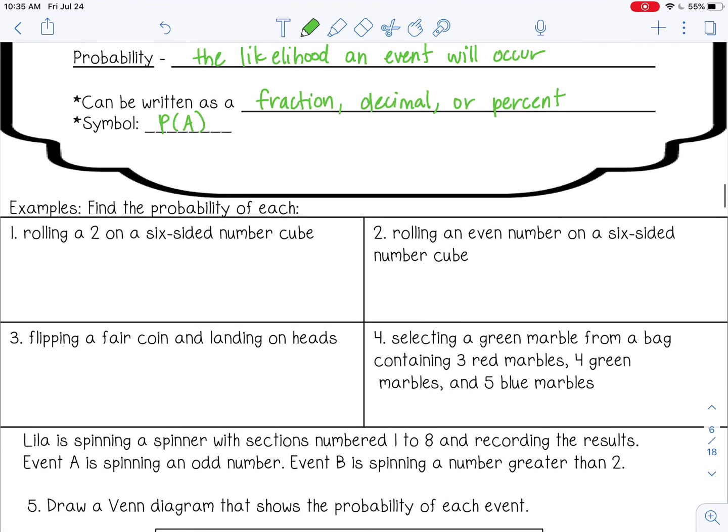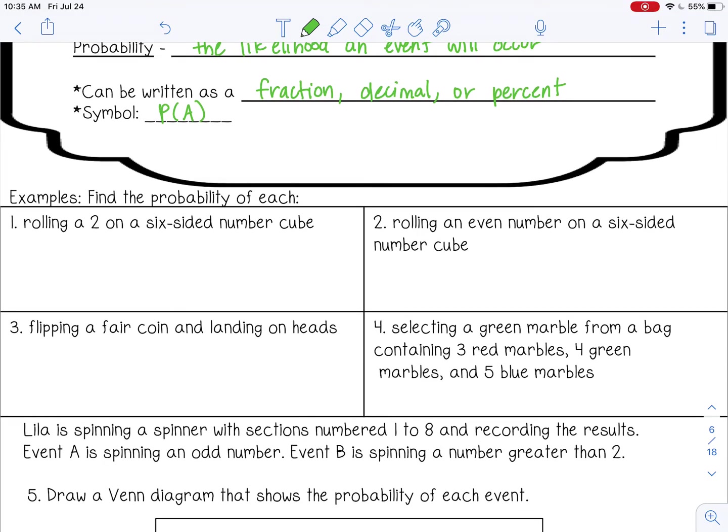Find the probability of each. Rolling a 2 on a six-sided number cube. When you're finding probability, you want to put what you want to happen in the numerator, and then the total possible outcomes in the denominator. So if I want a two, think about a six-sided number cube, or a dice. How many twos are on that number cube? There should just be one. So that goes in the numerator. And then in the denominator, you put how many total numbers there are. So the probability is 1 out of 6.